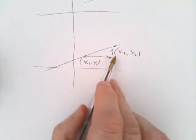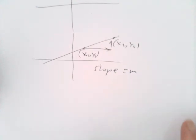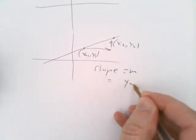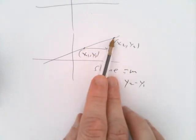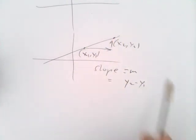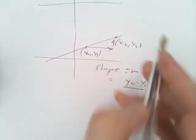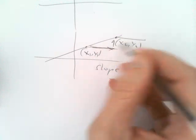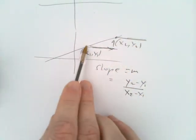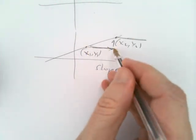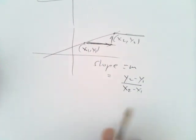The slope, which is usually the letter M, is the ratio of how much it goes up. The difference in the y's divided by how far out it goes, the x where it starts and the x where it finishes. This here is the difference in the x's.